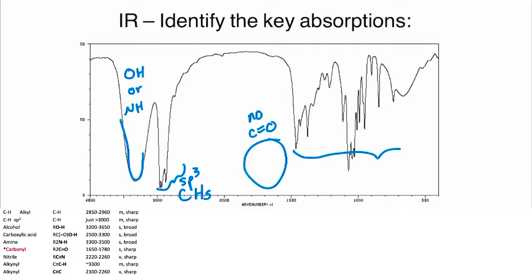There are sp3 hybridized CHs, no carbonyl group this time, and we ignore the fingerprint region. If we look at the structure of this molecule, indeed we see it's a primary alcohol.